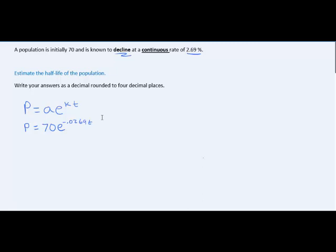Since I am to estimate the half-life of the population, that's the amount of time, so I'll be solving for T, it takes for the population to cut in half. Since I started at 70, cutting in half would be 35. So I want to know the amount of time it takes my initial population of 70 to reach 35. Since P is my future population, I'll replace P with 35 and solve this equation for T.